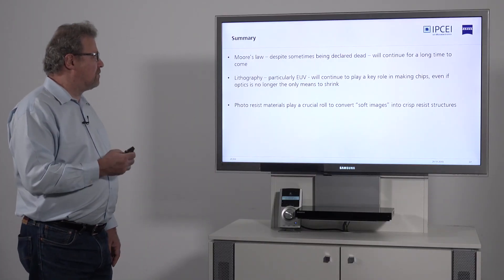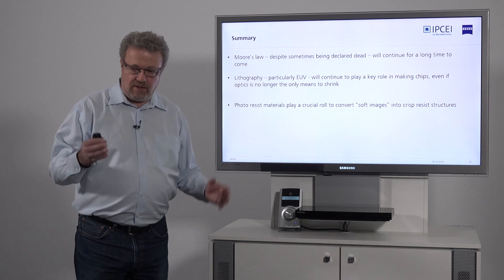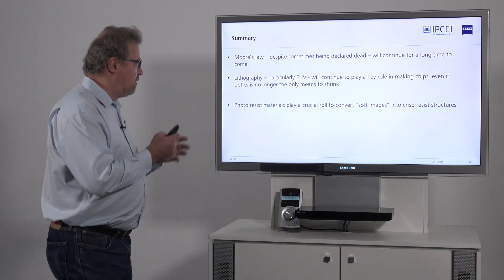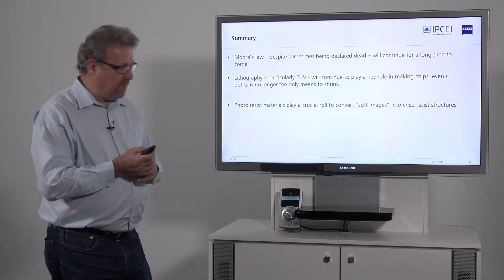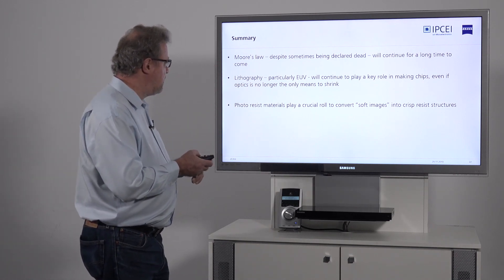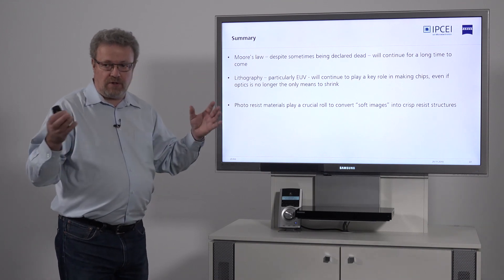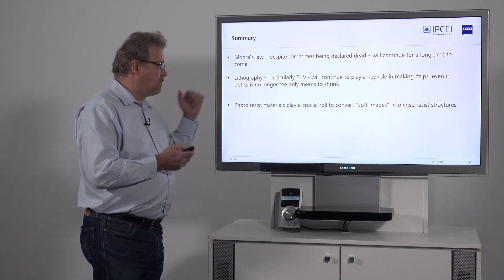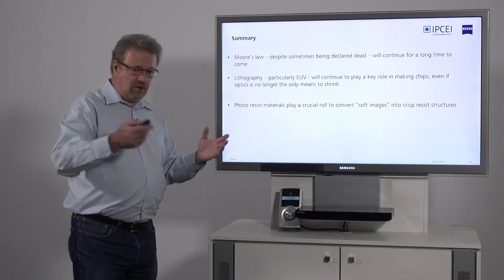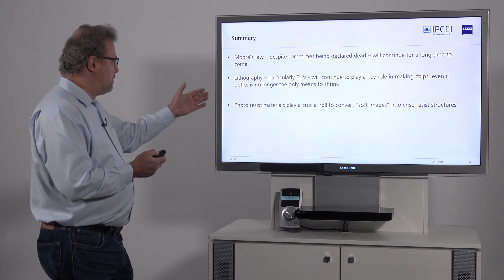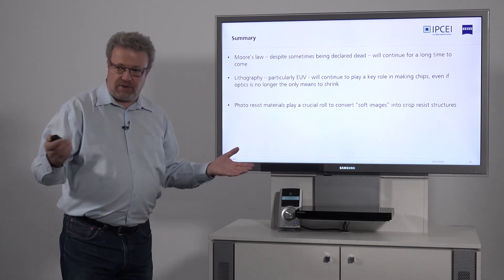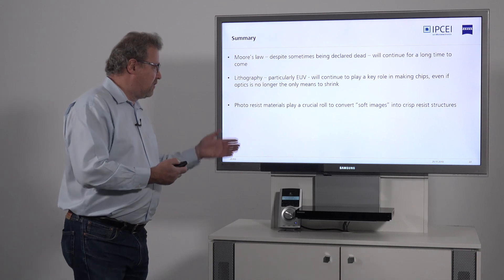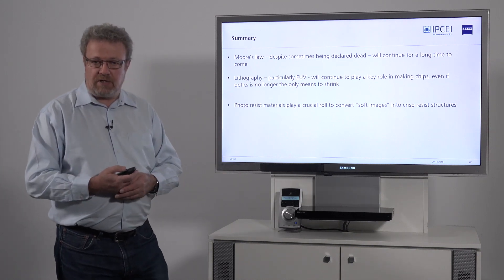In summary: Moore's law, despite sometimes being declared dead, will continue — it's healthy and will continue for many years to come, making better devices, more memory, faster chips, and more transistors per area. Lithography is no longer the only way to shrink, but it's still one way to shrink, and EUV in particular will continue to play a role for years to come. In this final section, I pointed out that the photoresist is an essential part of bringing the image down to the wafer, and there is still, as we speak, a lot of work being done to improve on this side.